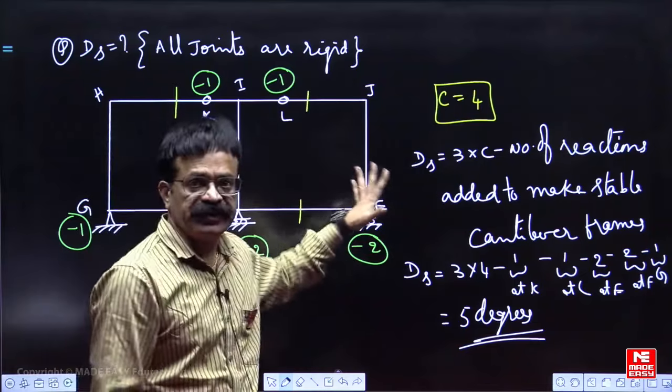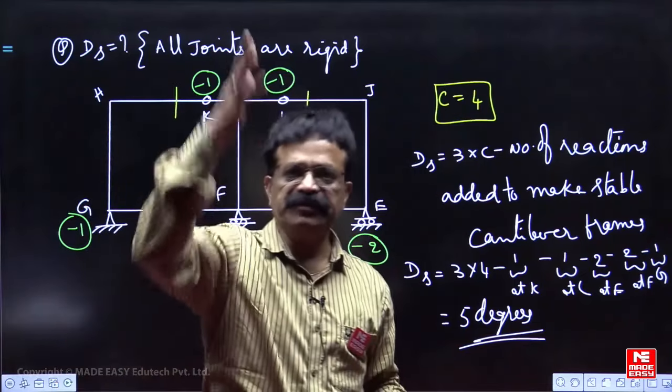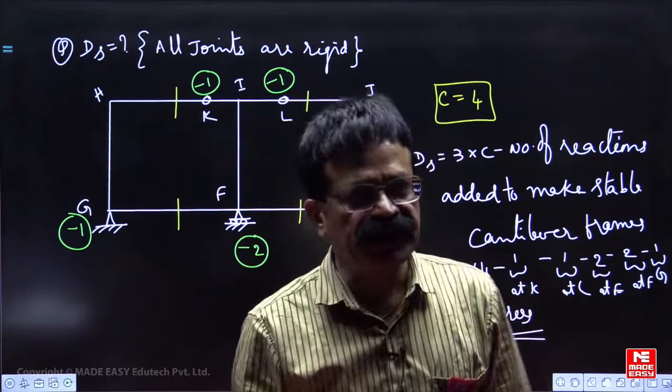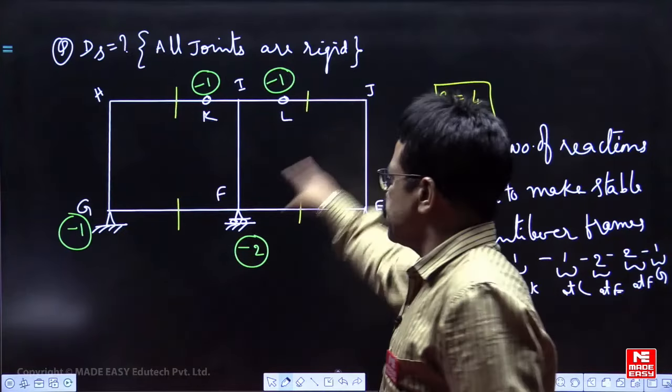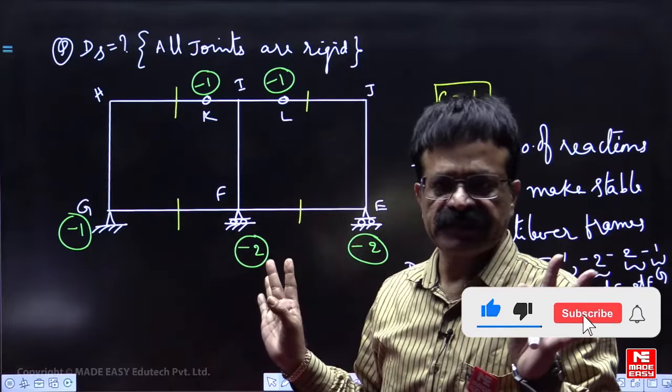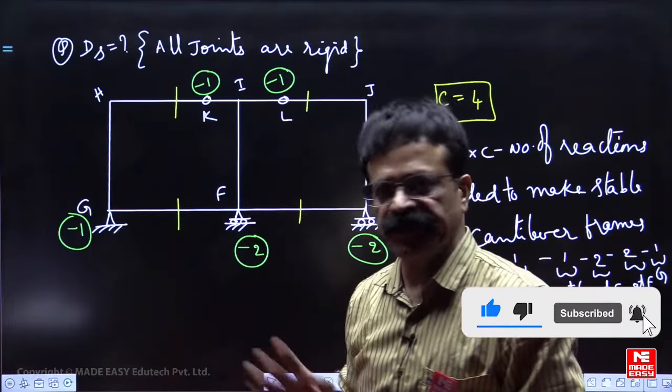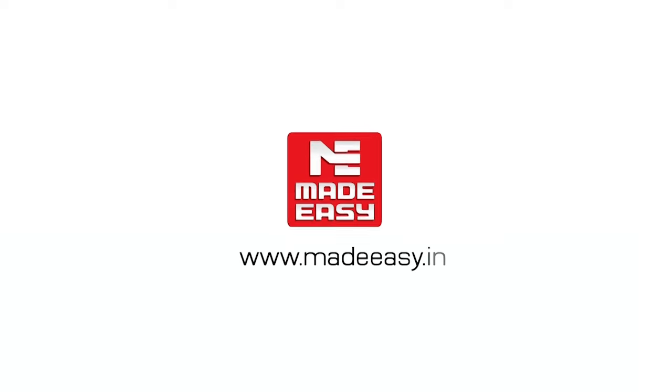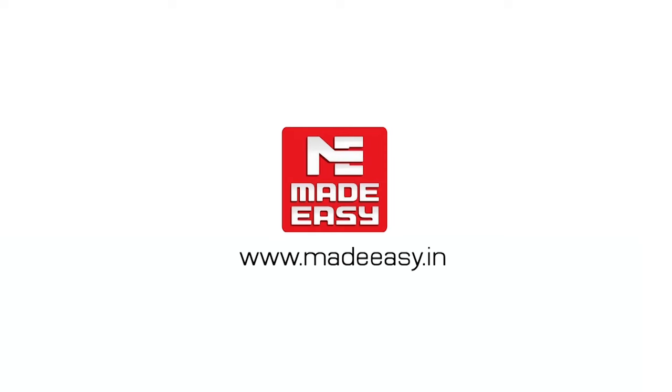This is the easiest way to finish up the problem. First make them independent cantilevers, then there must be stable cantilevers. To make them stable, how many reactions you have to add, so many reactions you subtract, then you can use that 3×C formula.